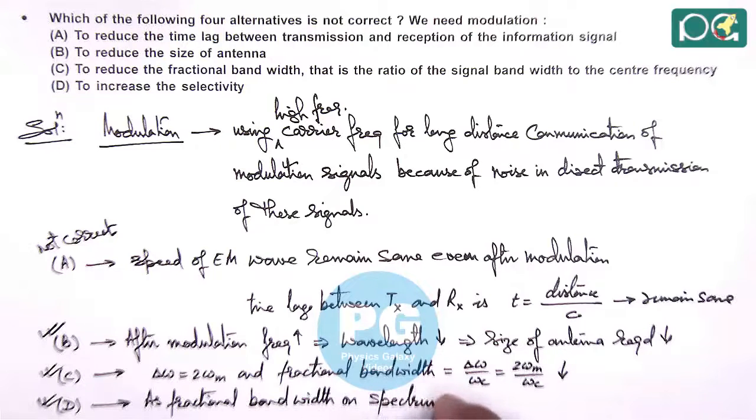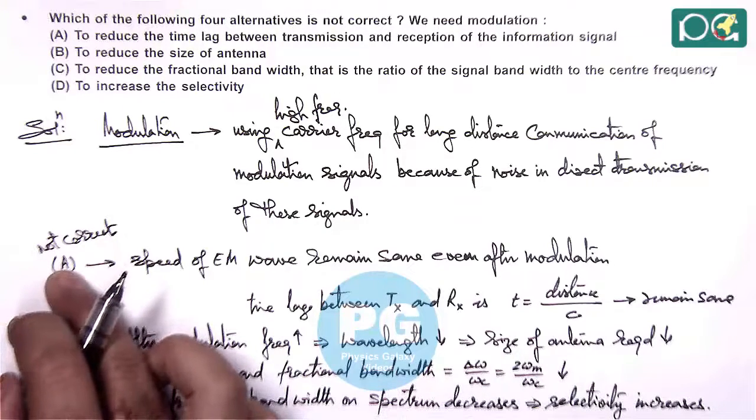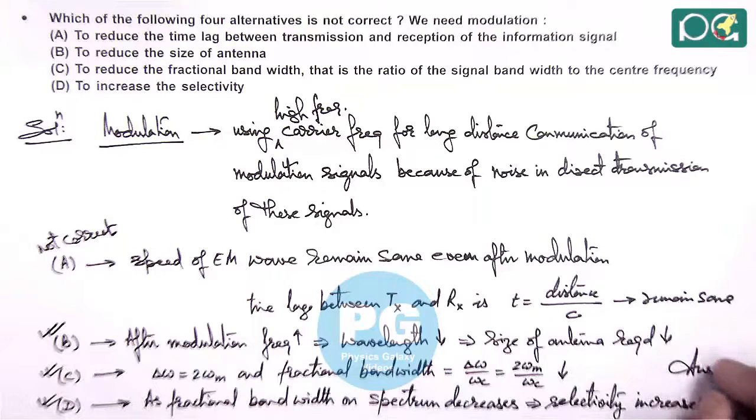This implies here selectivity increases which also denotes the quality factor of the circuit that increases. So only option A is there which is not correct, so answer to this question we'll choose as option A, the statement which is not correct out of the four.